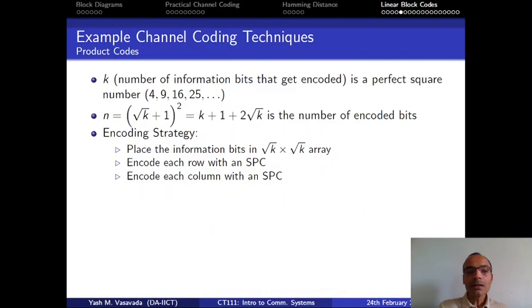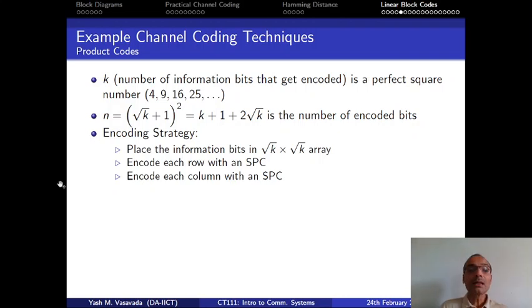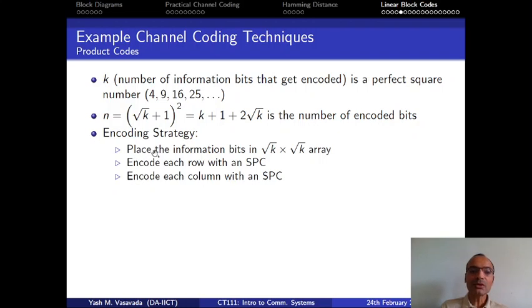Now we will take another channel coding scheme known as the product code — specifically the square product code. The reason it is called that is because the number of information bits that get encoded is a perfect square: either 4, 9, 16, and so on. The representation for n turns out to be (√k + 1)², and we will see why shortly when we look at the encoding method.